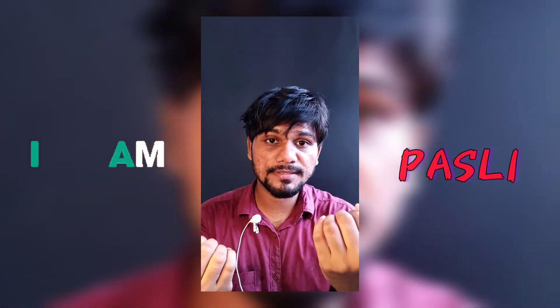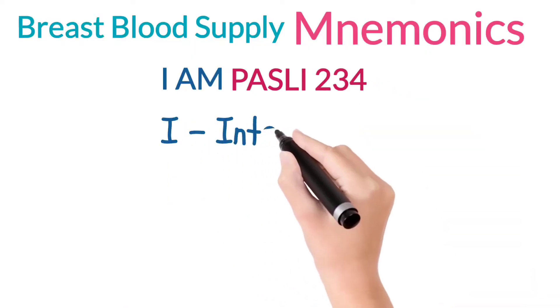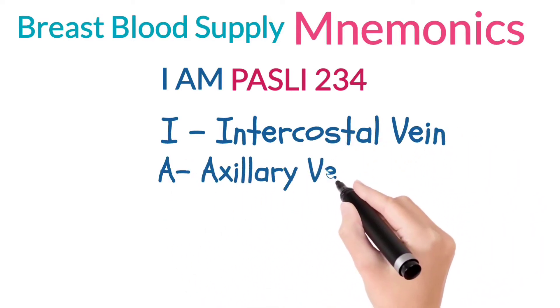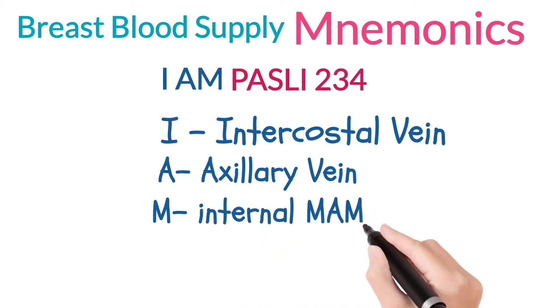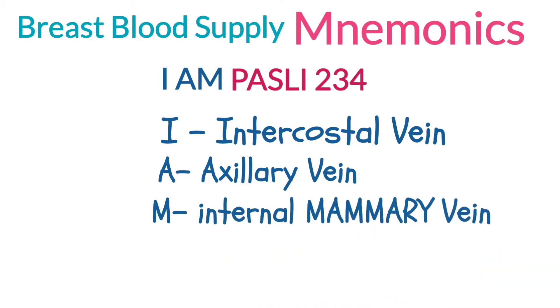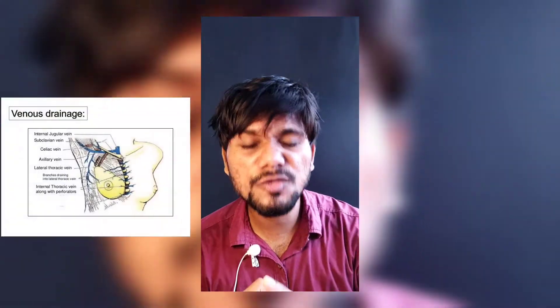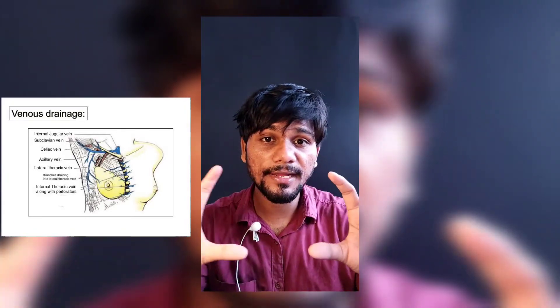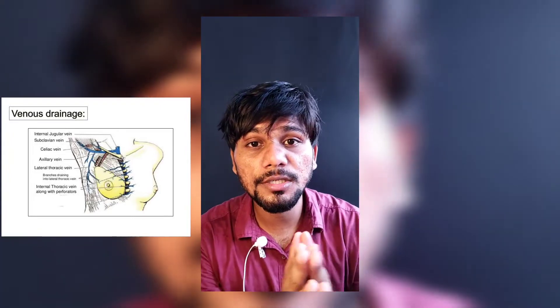Now, dividing 'I AM PARSLEY 2-3-4' into two parts: first 'I AM' and then 'PARSLEY'. 'I AM' stands for the veins — I stands for the intercostal vein, A stands for the axillary vein, and M stands for the mammary vein, that is the internal mammary vein.